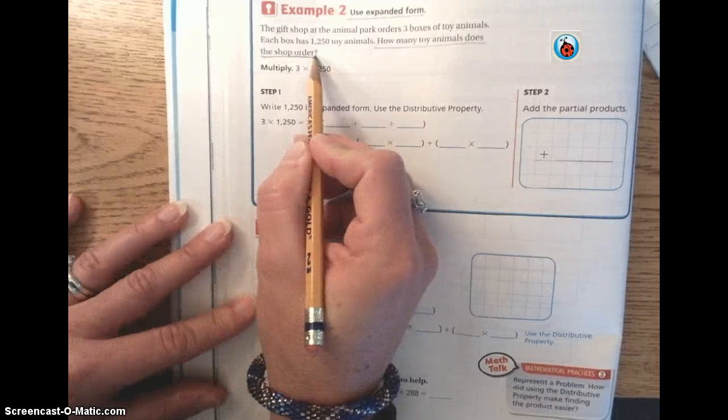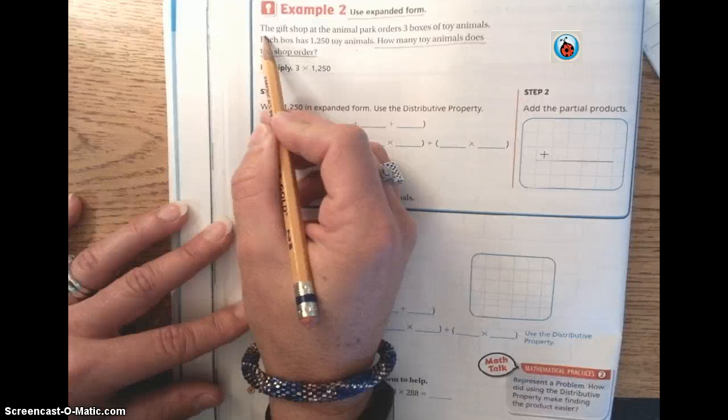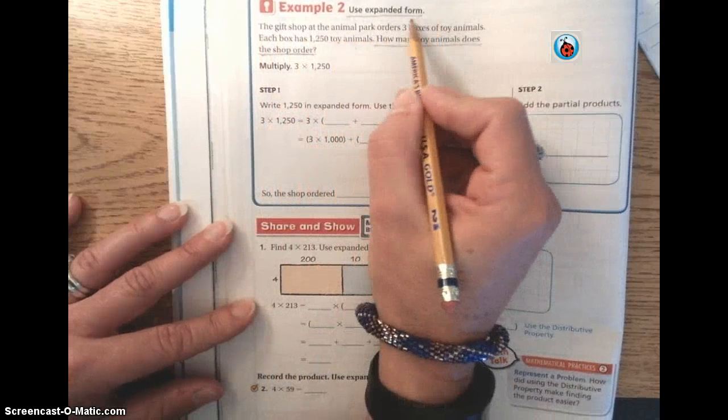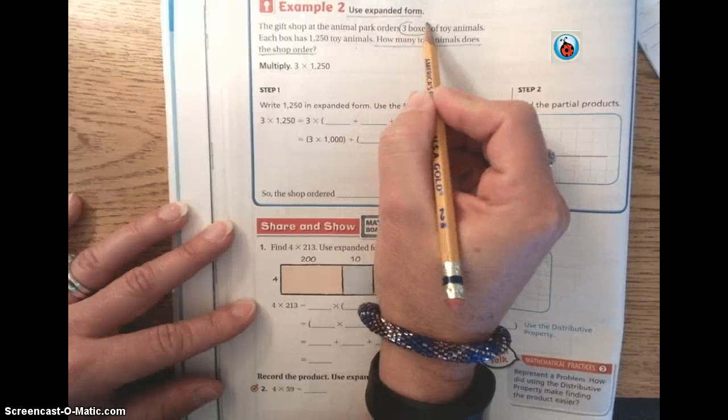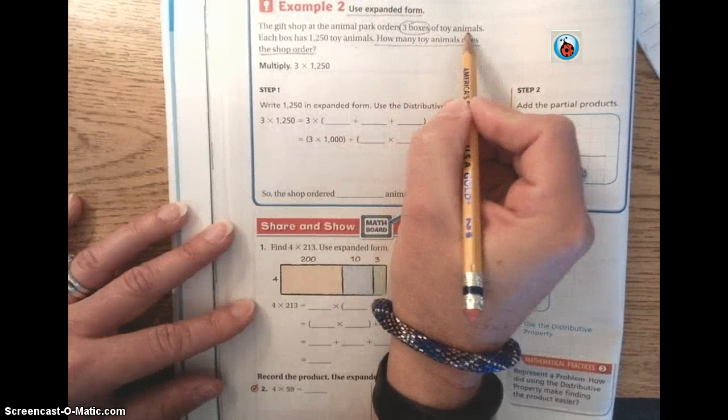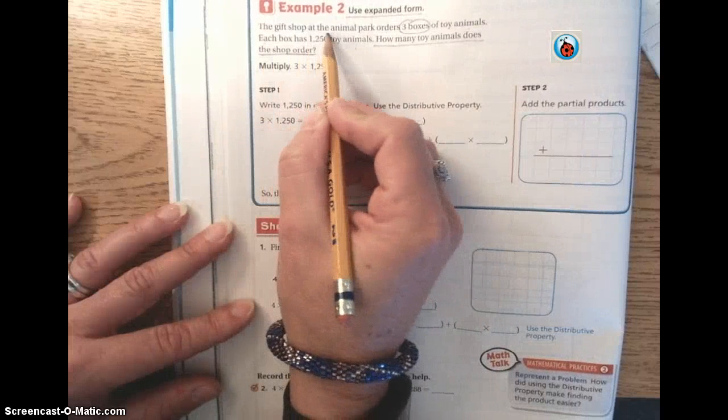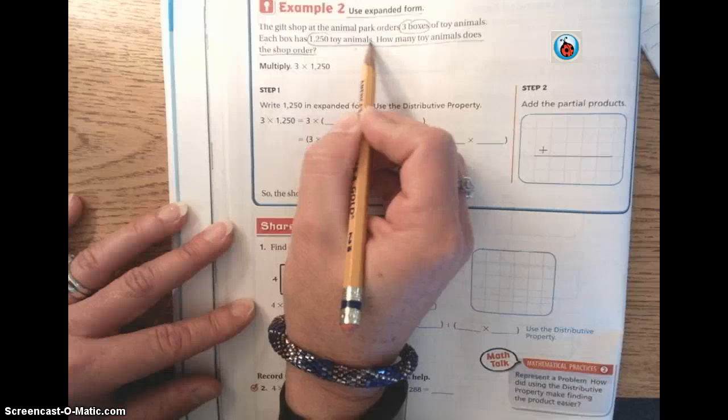The clues that you are going to use, if we look here, we know the gift shop at the animal park orders three boxes. So three boxes is going to be very important of toy animals. And we know that within each box, there's 1,250 toy animals.